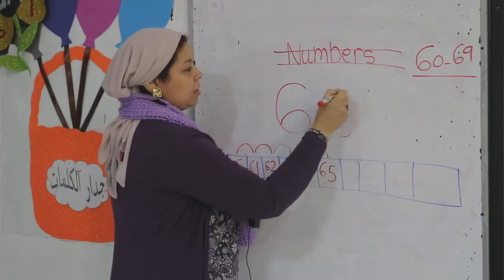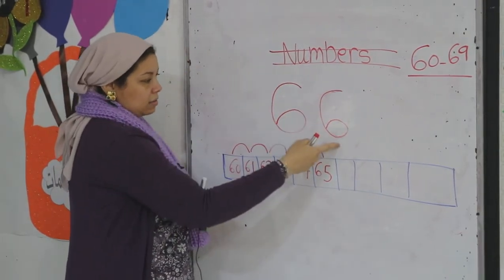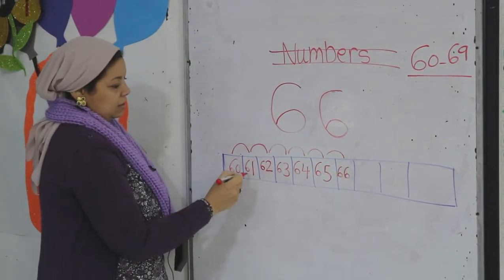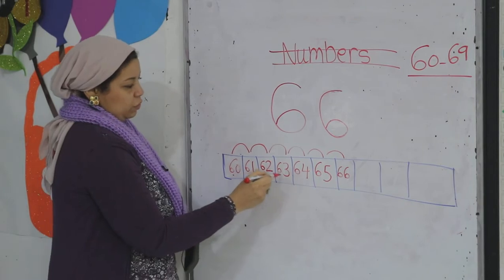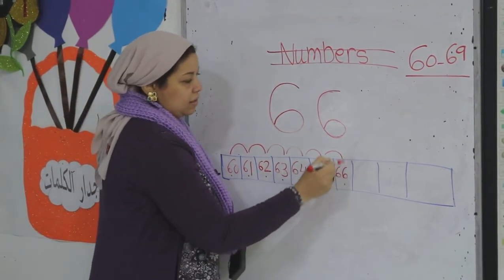What's the number? 66. 60, 61, 62, 63, 64, 65, 66. Then?